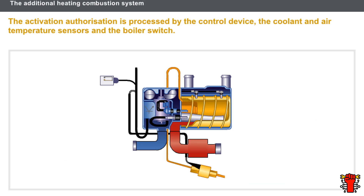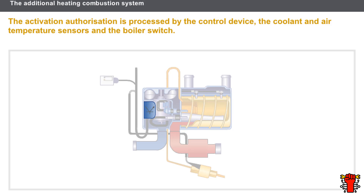Let us look first at the activation authorization for additional combustion heating. Authorization is processed by the following components: the control device, the temperature sensor, and the air temperature switch. The control device is a computer in the boiler, designed to analyze information from the sensors and manage the operation of the different actuators in the heat production cycles. The coolant temperature sensor in the boiler is a negative temperature coefficient type thermistor. The air temperature switch located outside the boiler is a thermal switch.